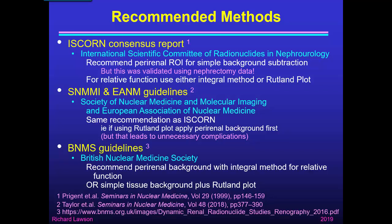The British Nuclear Medicine Society guidelines also recommend the perirenal background if you're going to use the integral method for relative function. But they say that if you want a more robust measure of relative function, you can replace the perirenal background subtraction with a simple tissue background-only subtraction, if you then go on to do the Rutland plot to remove the vascular background. So you have the choice of either using the perirenal, or the Rutland plot, or a combination of the two.